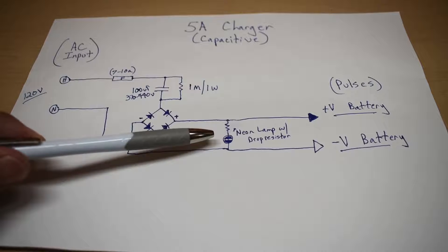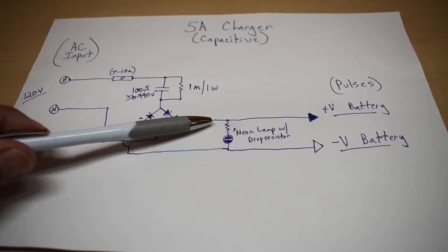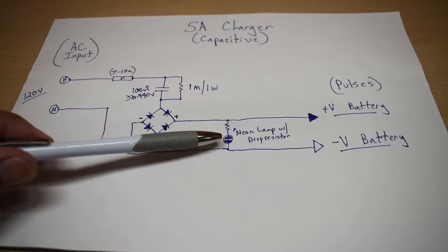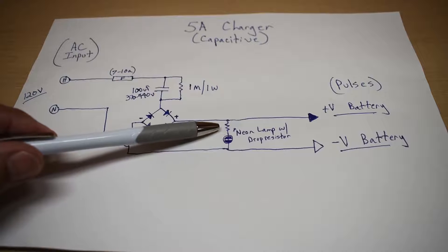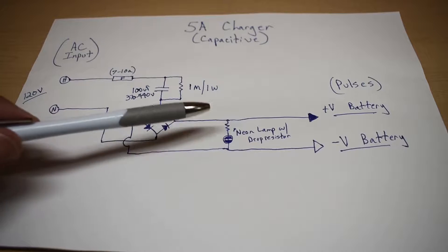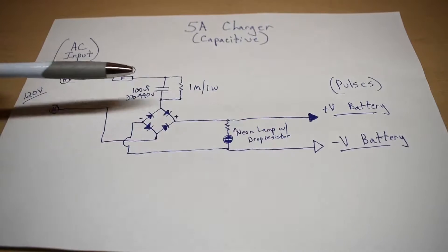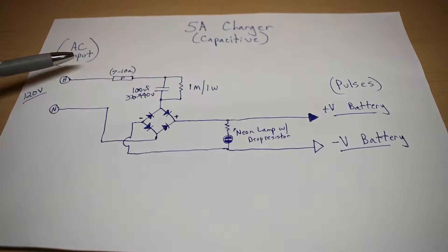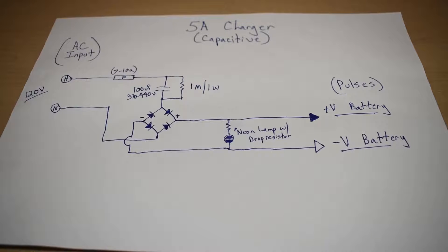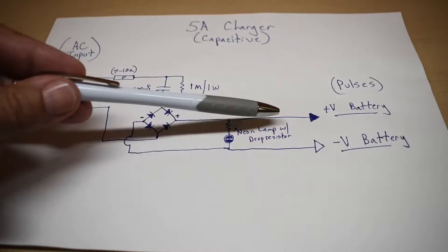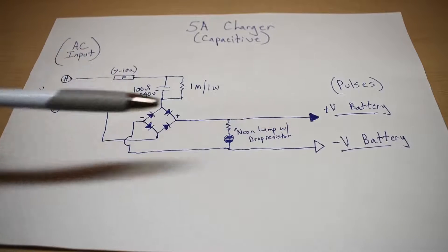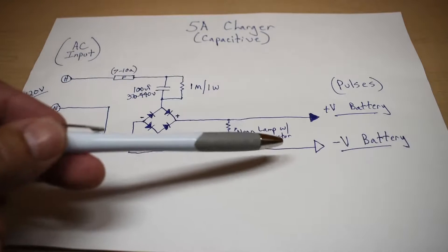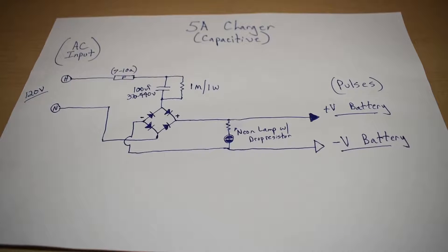Now, this over here is not absolutely necessary, but I did add it across the output. What it is, it's a neon lamp, 120 volt, with a current limiting or drop resistor. And the purpose of that is when this is connected to a lead acid battery, you connect the clamps first before you do anything, and then you plug it in. When you plug it in, if that lamp illuminates, it's going to indicate you don't have a good connection with the clamps at the battery. In that case, you would unplug, readjust the clamps, and then plug it back in, and then the neon lamp should be off.